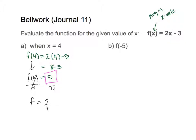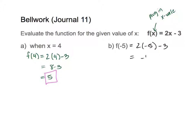What you're doing is plugging in the x value they give you. Our x value was 4; we plugged it in, worked it out, and our output was 5. Same thing with f(-5): this is not saying f is multiplied by negative 5. If our x is negative 5, we plug that in: 2 times negative 5 minus 3. 2 times negative 5 is negative 10, minus 3 is negative 13. So negative 13 is my output.